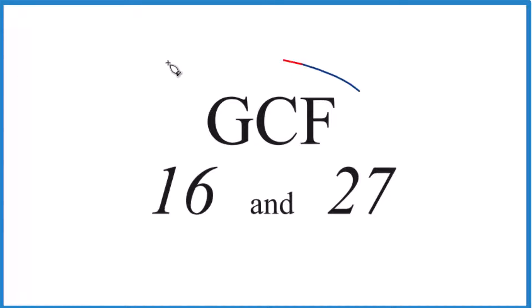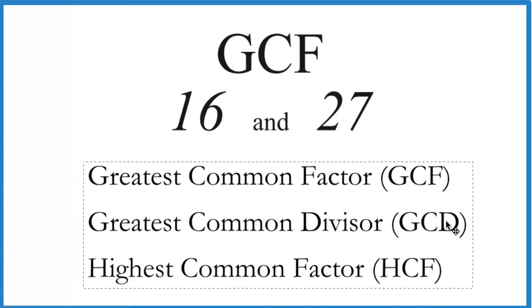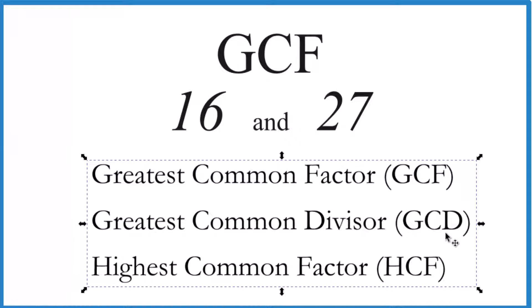So if you're looking to find the Greatest Common Factor for 16 and 27, here's how you do it. The GCF, Greatest Common Factor, is also known as the Greatest Common Divisor (GCD) or the Highest Common Factor (HCF), but these are all the same thing.